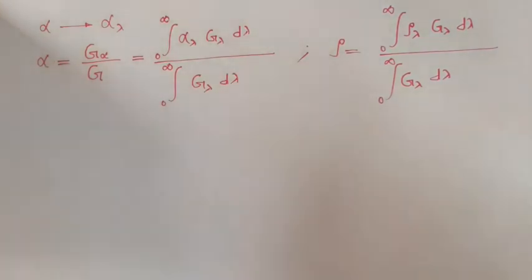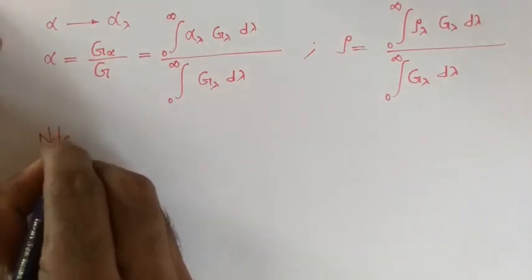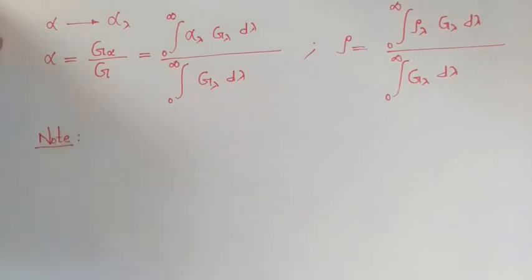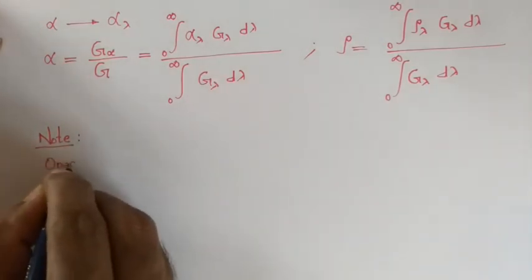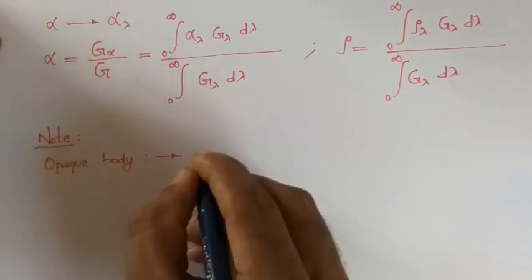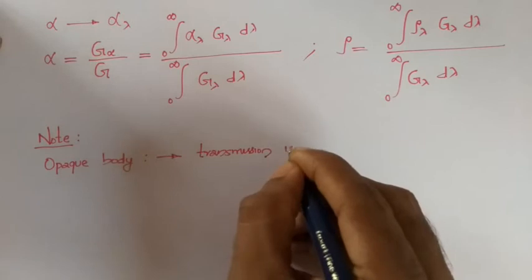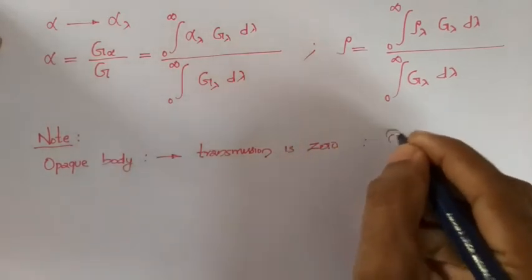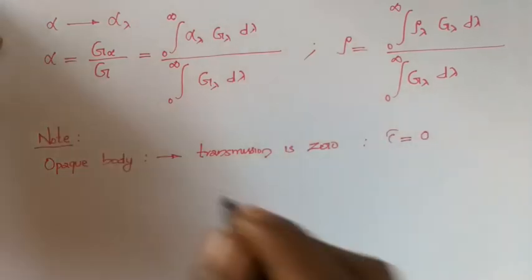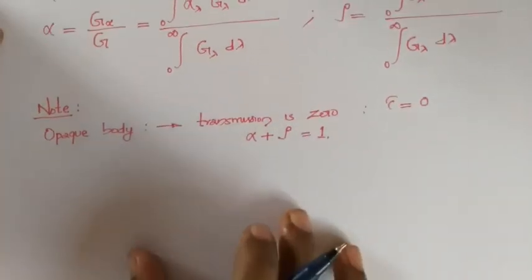Total transmittivity can similarly be found from spectral transmittivity. Now some note points: for an opaque body, transmission is zero, meaning tau equals 0, and for such a body the sum of alpha and rho equals 1. A white body reflects all radiation, so its reflectivity rho equals 1, and therefore absorptivity is 0 and transmittivity is also 0.